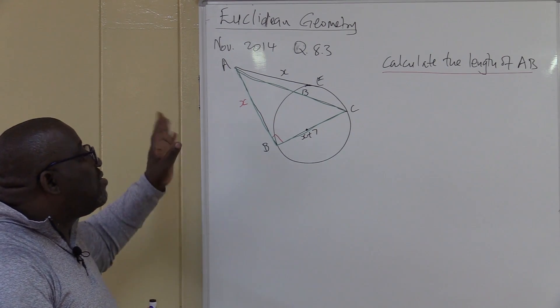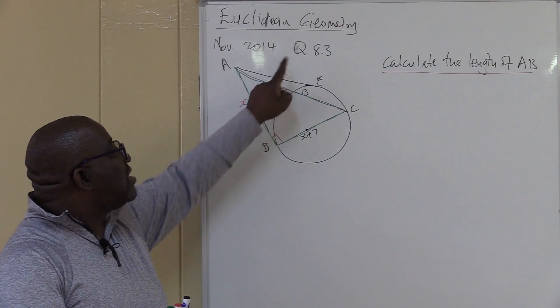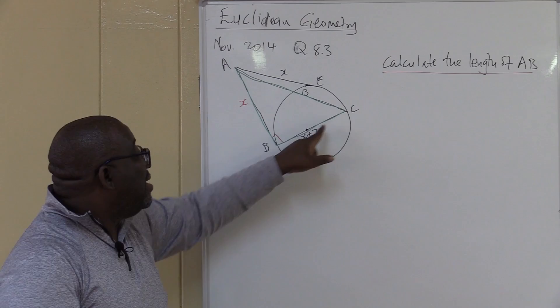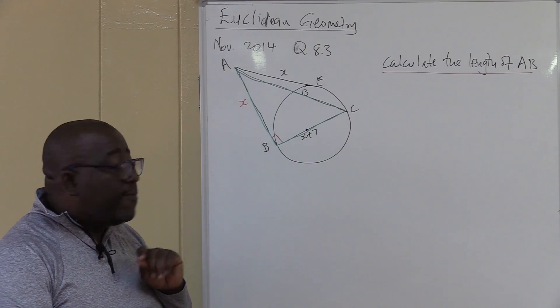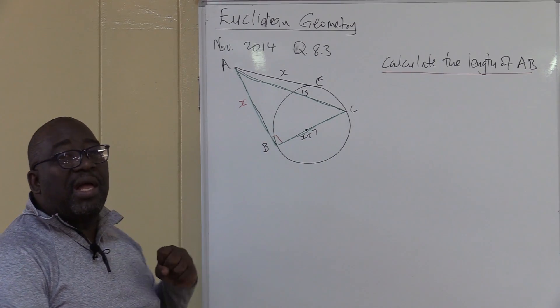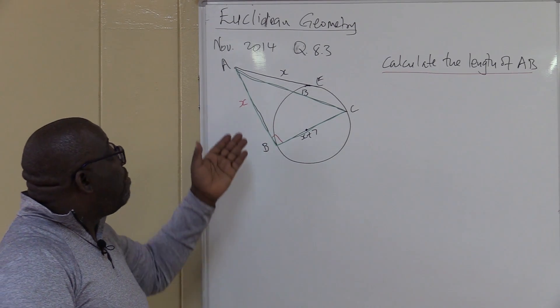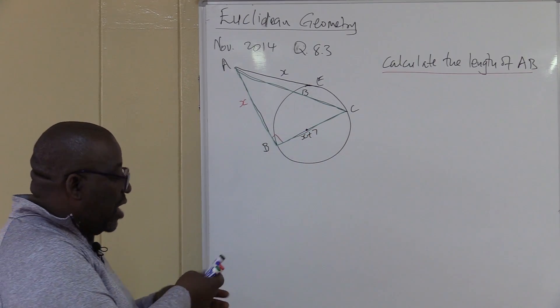Now once you are done with the theorems from grade 12. Number 1, two tangents from the same point. If that is X, this one will be X. Number 2, whenever you have got a radius or a diameter, whenever it meets a tangent, 90 degrees will be formed. Once you establish that fact, right angle triangle will come out. Then you will go to your grade 8, grade 9 and apply the theorem of Pythagoras. Which says AC squared. Let's write it down.